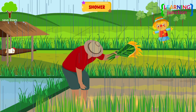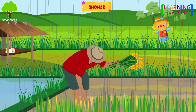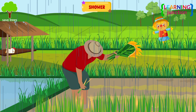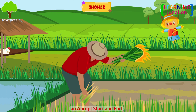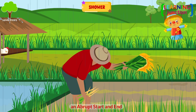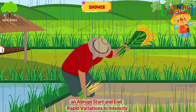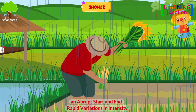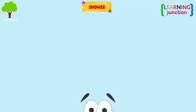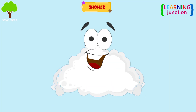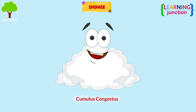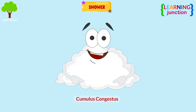Shower: this form is characterized by an abrupt start and end and by rapid variations in intensity. It comes from convective clouds like cumulus congestus.